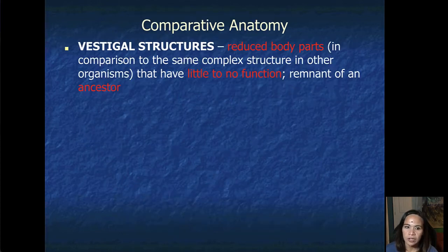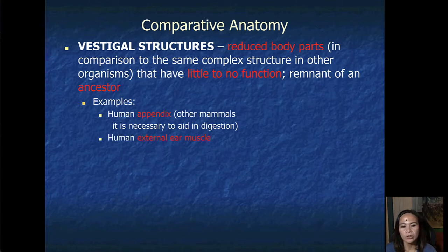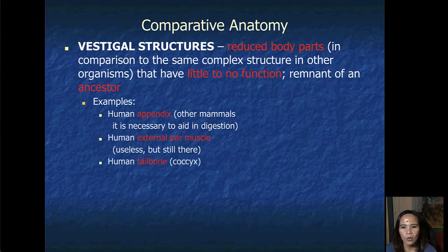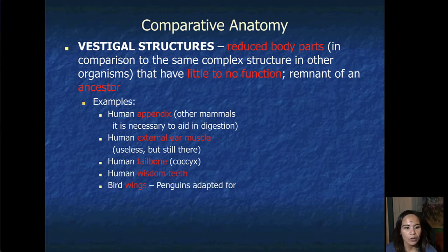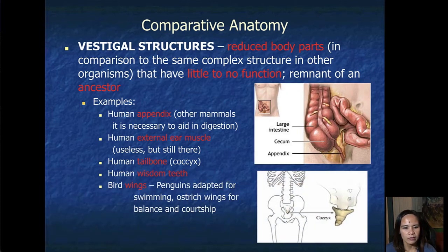The third structure is your vestigial structure. These are reduced body parts in comparison to the same complex structure in other organisms that have little to no function, and they believe this is a remnant of an ancestor. Some examples is your human appendix. In other mammals, it is actually necessary to aid in digestion. The human external ear muscle, so some people can move their ears, it is actually useless, but it's still there. And you have your human tailbone or the coccyx, and the human wisdom teeth, as well as the bird's wings. Penguins have adapted for swimming and ostrich wings for balance and courtship. You got your appendix right there and your coccyx, which is your human tailbone.